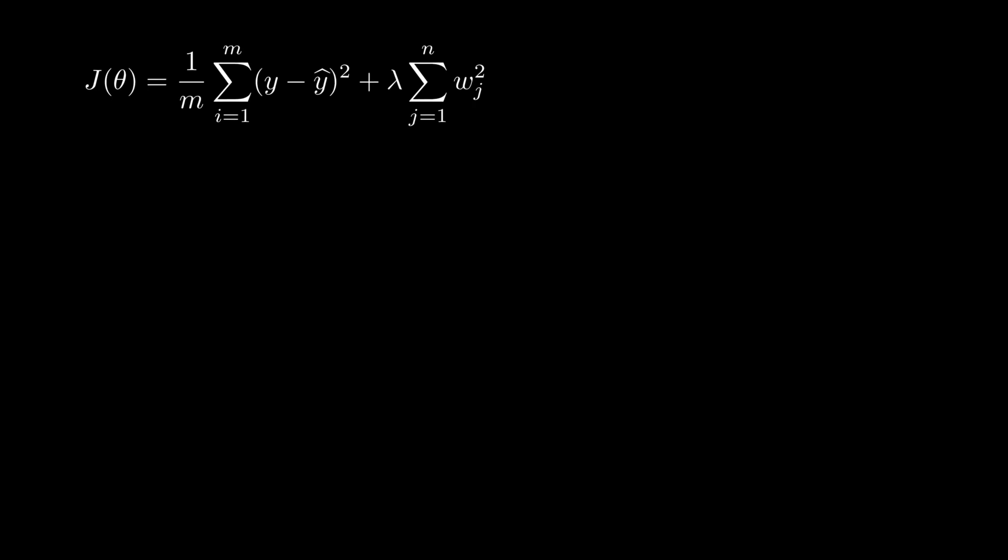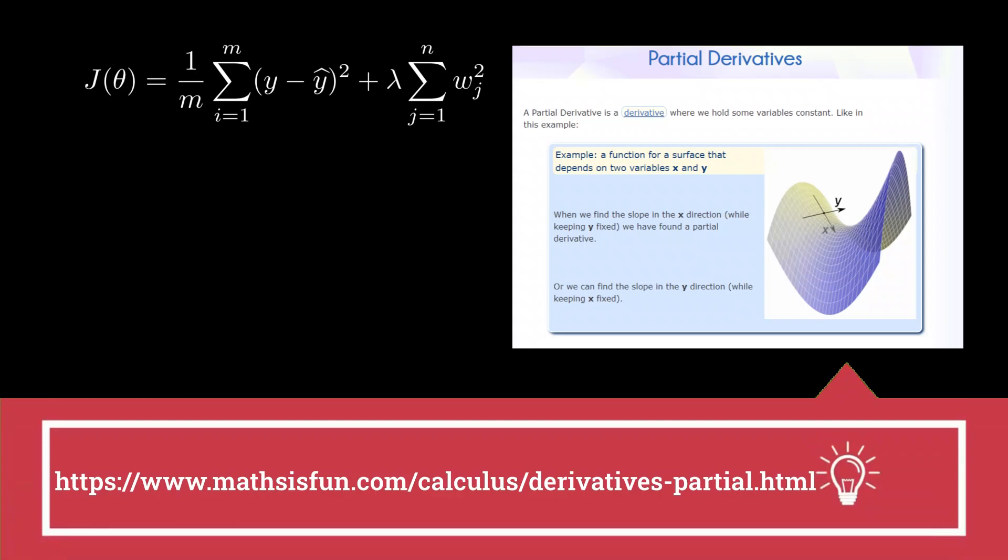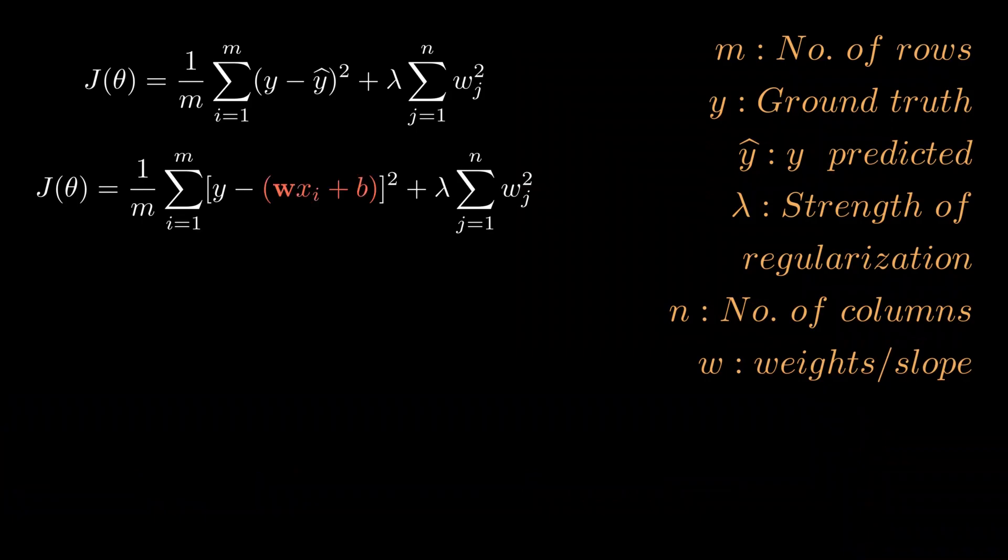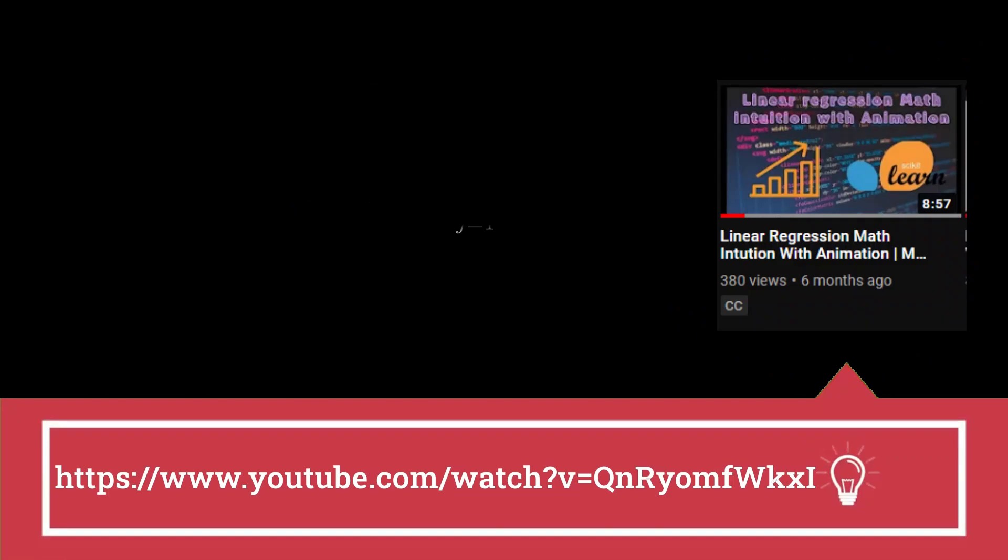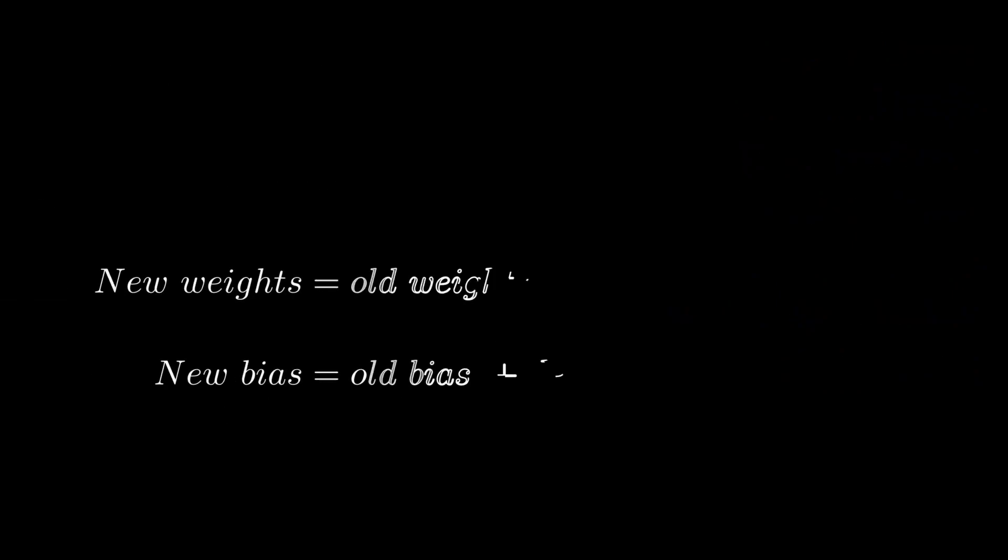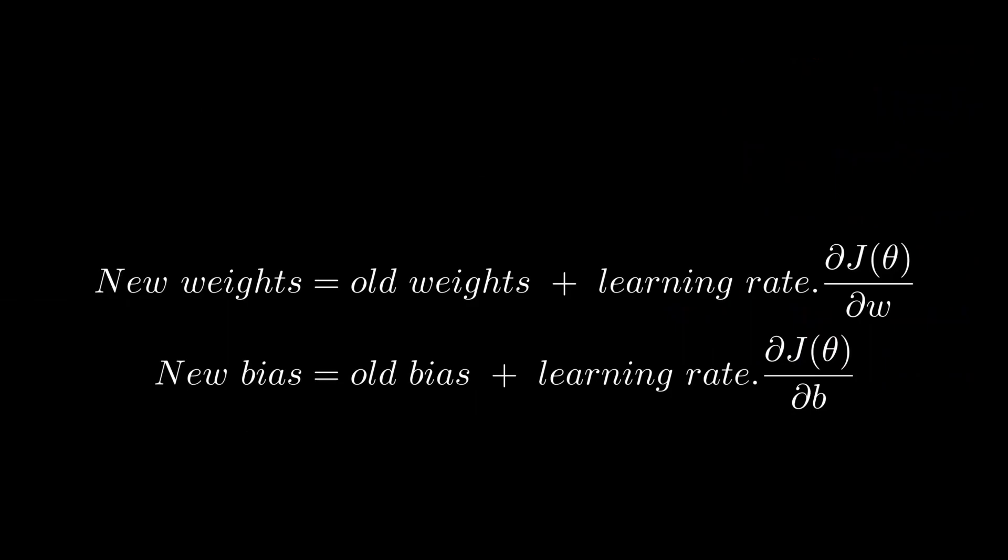All these regression algorithms use gradient descent for finding the minimum or optimal values of weights and biases. For that we have to calculate the partial derivative of this cost function with respect to weights and then with respect to bias. Now we have substituted y predicted as wx plus b. I have discussed in depth about the equation y equals mx plus b in this video. Then we find the partial derivative of cost function j theta with respect to weights, and then we do the same with respect to bias.